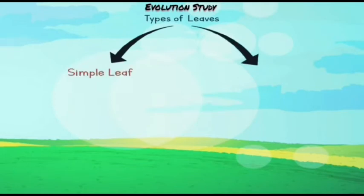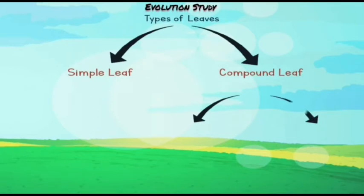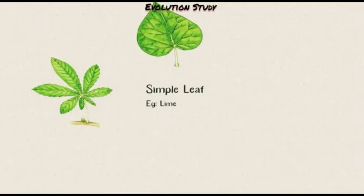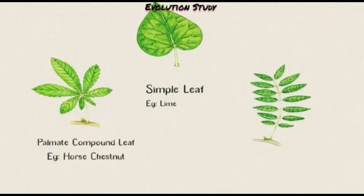Now let's talk about the sub-parts that follow the compound leaf, which are mainly the palmately compound leaf and the pinnately compound leaf. We can see a simple leaf diagram of a lime, and also a compound leaf diagram. The palmately compound leaf is also known as the horse chestnut, and the last is the pinnately compound leaf.